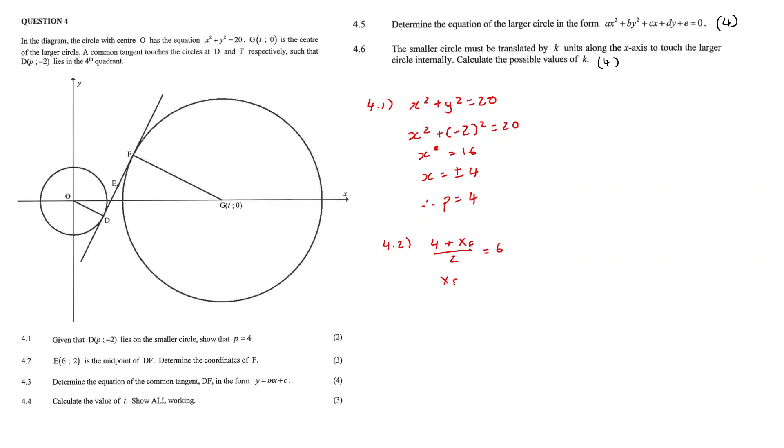We can do the same for y, saying negative 2 plus yF over 2 is equal to 2. And we get our yF value to be 6. So F is 8 and 6.